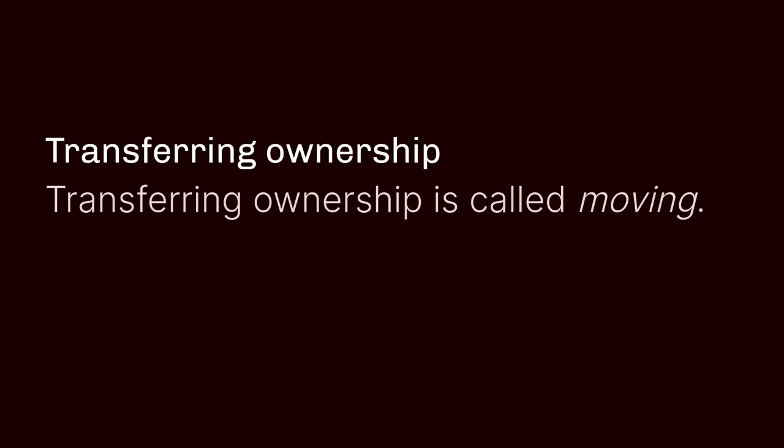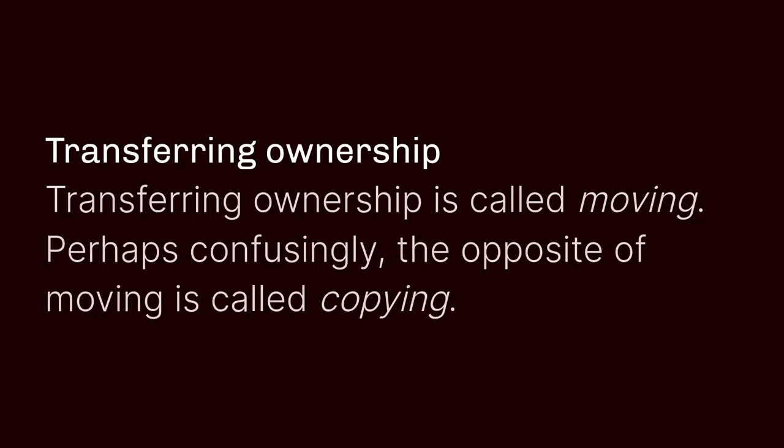We can transfer ownership. In Rust, transferring ownership is called moving. The opposite of moving is copying. We can either have move semantics, where ownership moves to a new owner, or copy semantics, where the data is actually duplicated and now we have two owners.